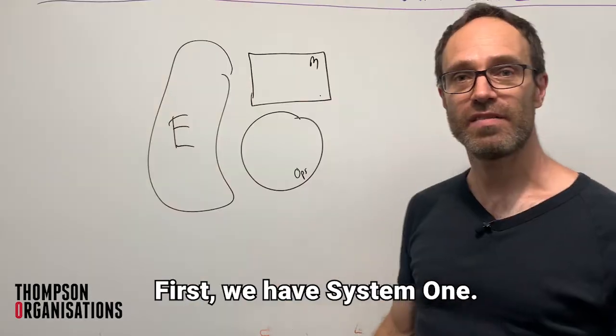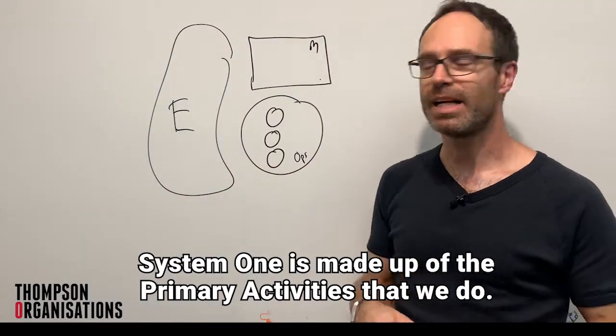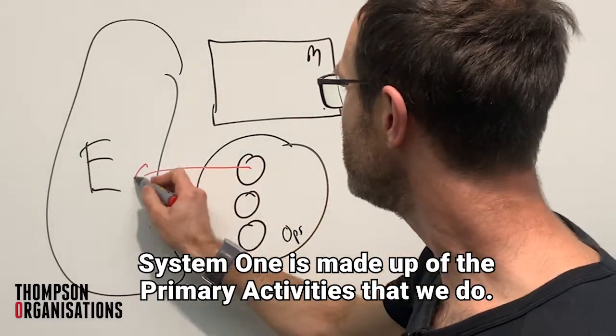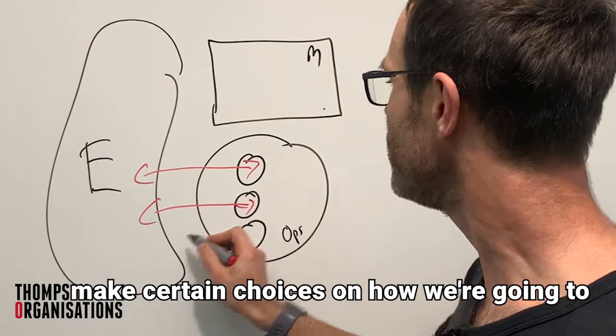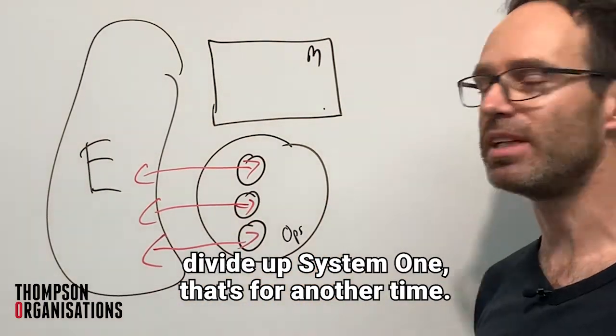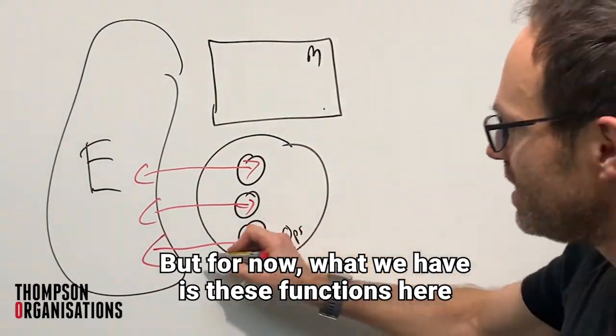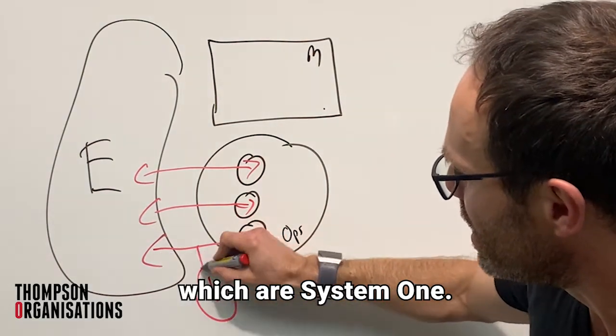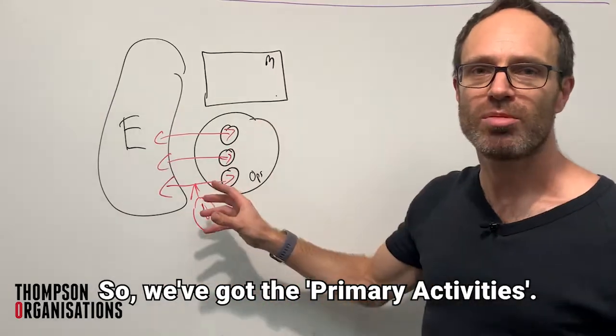First, we have System 1. System 1 is made up of the primary activities that we do. Now, when we're doing structure work, we make certain choices on how we're going to divide up System 1. That's for another time. But for now, what we have is these functions here, which are System 1. So we've got the primary activities.